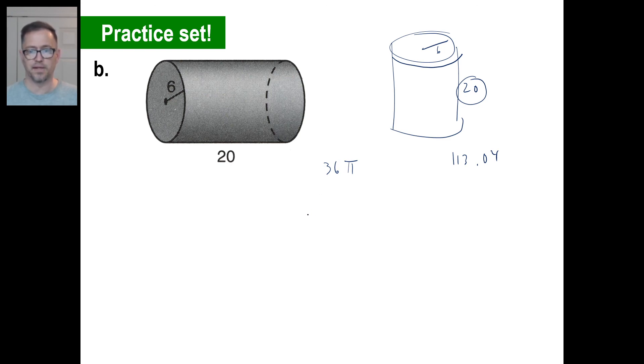Or what you can do is you can say 36 pi times 20. Well, 36 times 20 is 720. So this is a legit answer right there. You can leave it like that. Or you can just go ahead and say 113.04 times 20. And you can go, okay, 2, 2, 6, 0 and then... And it's going to be 2,260.8 approximately. And that would be cubic whatever is the unit.